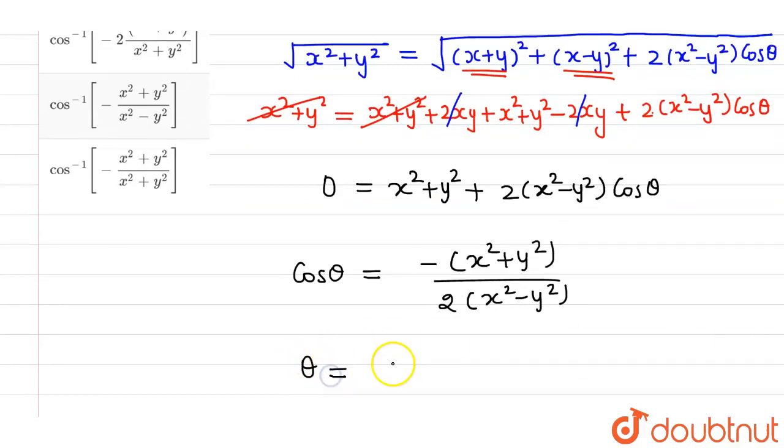So from here, θ will be cos⁻¹[-(1/2) × (x²+y²)/(x²-y²)]. So this will be the required angle.